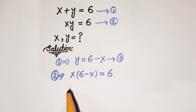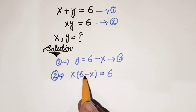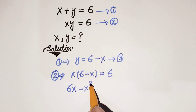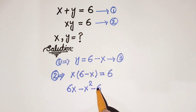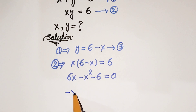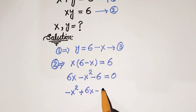Expanding, x is multiplied by 6 and by minus x, giving us 6x minus x squared. Bringing 6 to the left-hand side gives minus 6, so we get 6x minus x squared minus 6 equals 0. Rewriting: minus x squared plus 6x minus 6 equals 0.